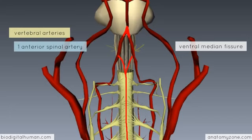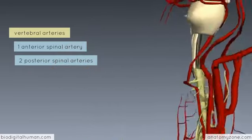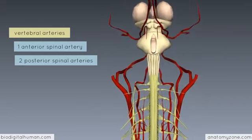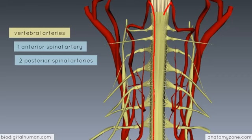The other two vertical vessels are the posterior spinal arteries — and you've got two of these. If we rotate the model to look at the posterior aspect of the spinal cord, you can see two branches given off from the vertebral arteries which form the two posterior spinal arteries. These run the length of the spinal cord down the posterolateral aspect. So you've got one anterior spinal artery and two posterior spinal arteries — three vertical arteries which originate in the cranial cavity and descend the length of the cord.